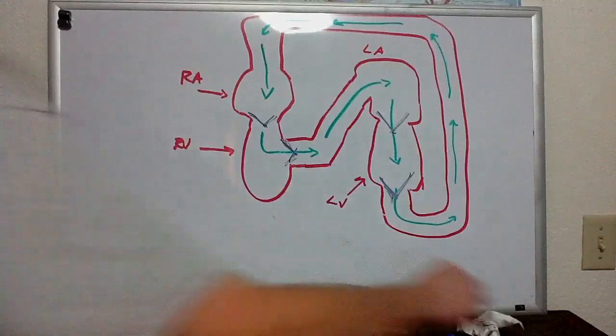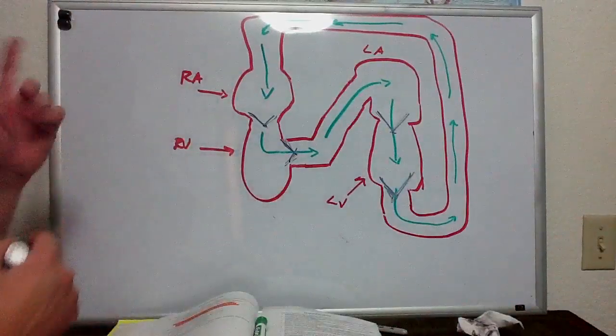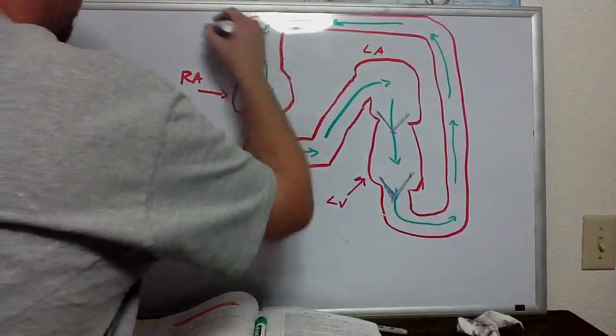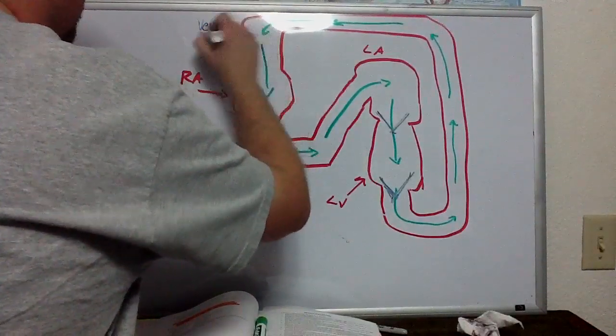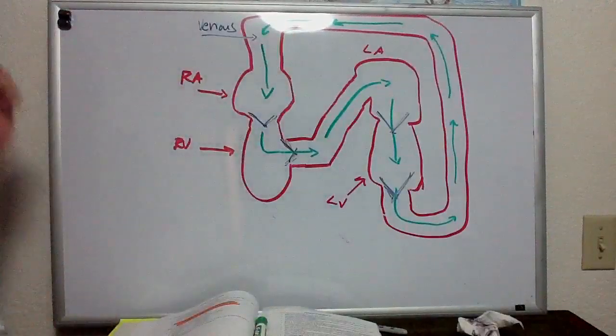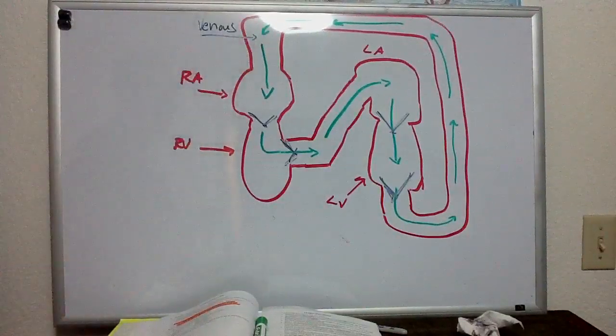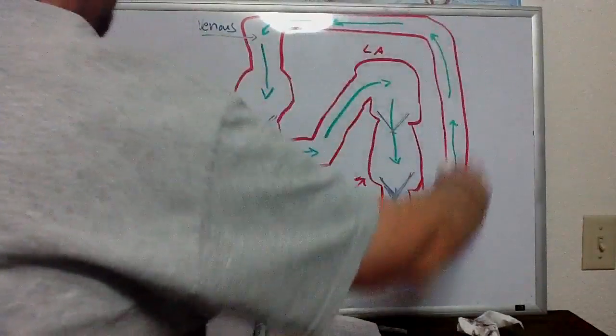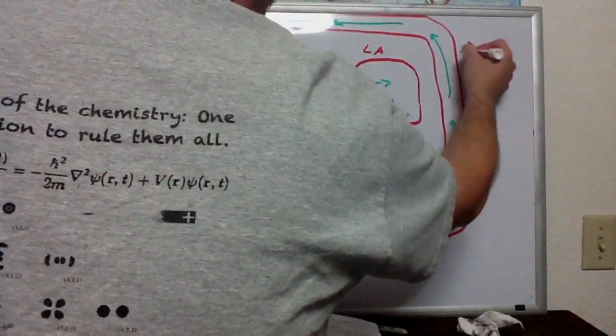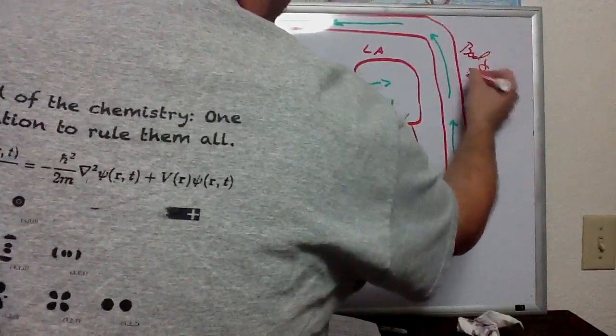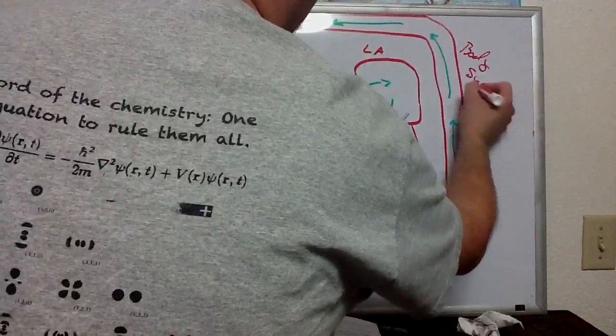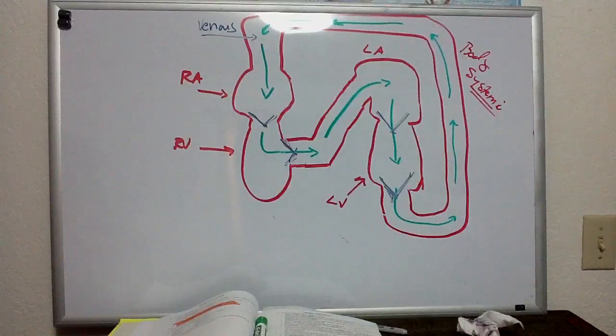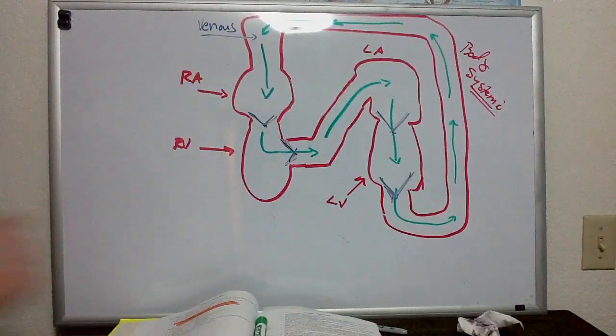So what I have is we'll start at the venous system. So what I have right over here is the venous system. So I have deoxygenated blood coming from the body. So all of this here is the body or the systemic circulation. So I'm going to start right over here in the venous system. What can we expect from the venous system?